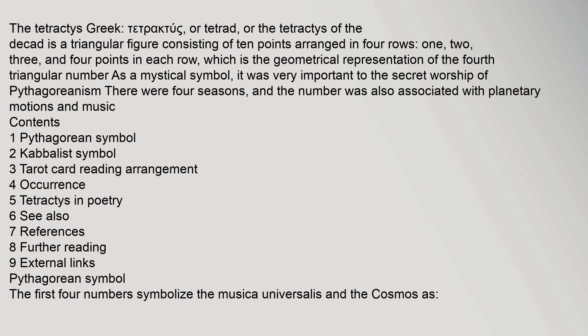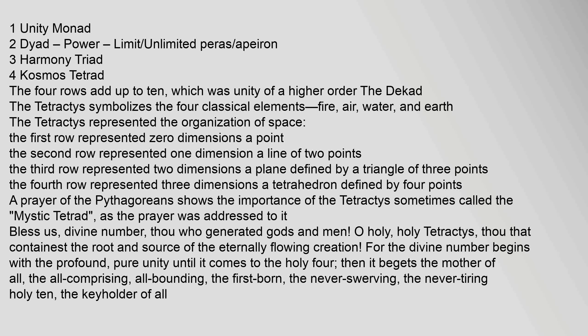The first four numbers symbolize the Musica Universalis and the Cosmos. 1 — Unity, Monad; 2 — Dyad, Power, Limit, Unlimited Pairs, Appearing; 3 — Harmony, Triad; 4 — Cosmos, Tetrad.